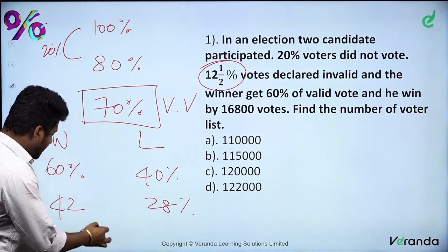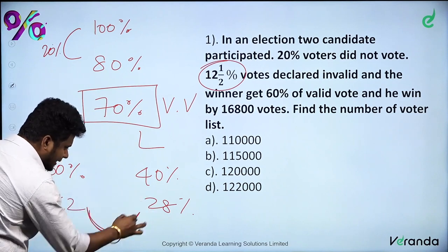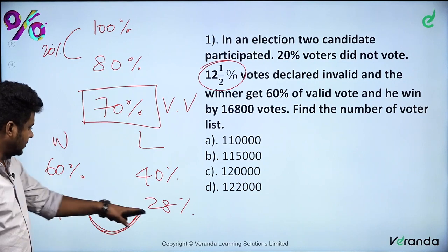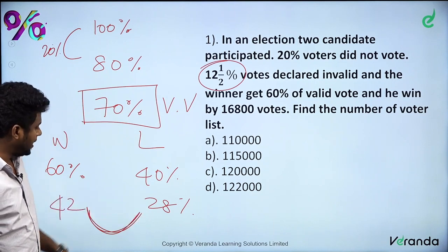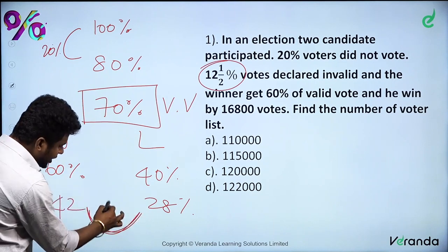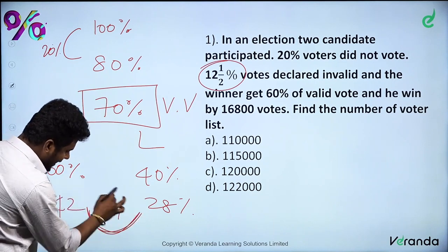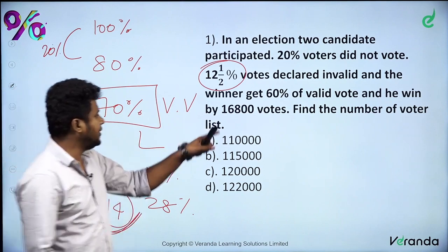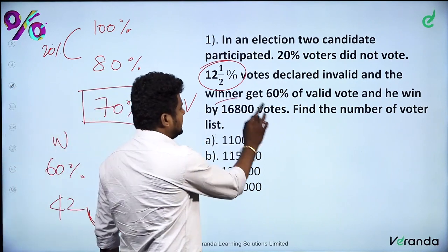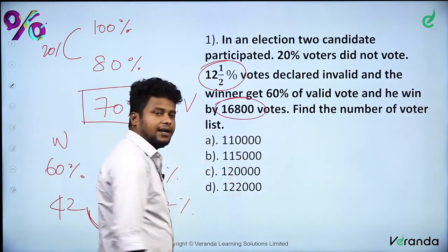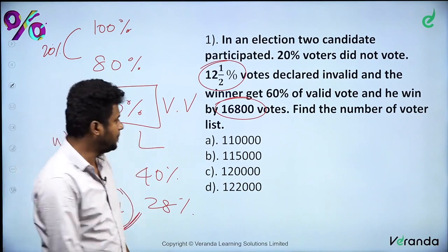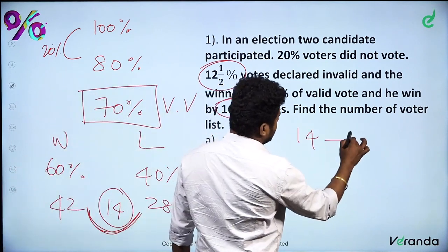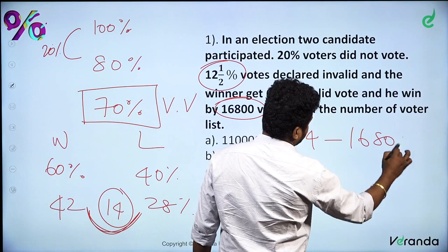The difference between winner and loser is 42% minus 28% = 14%. This 14% equals 16,800 votes.